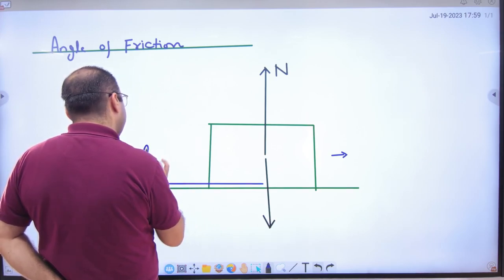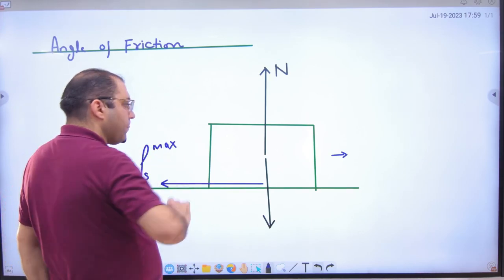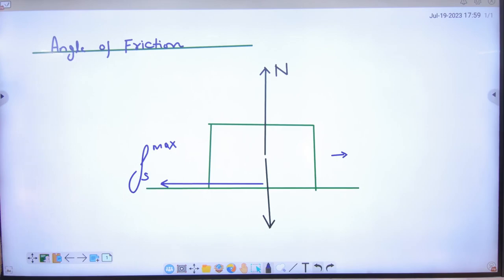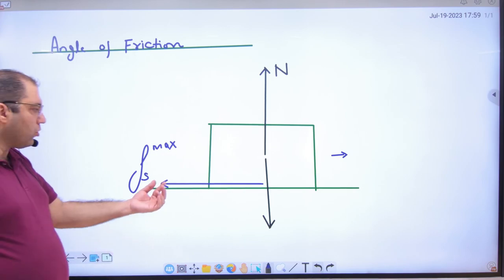And this friction is maximum static. Maximum static, not kinetic. The body is standing on maximum static friction, and this is S-max.